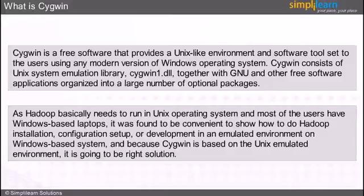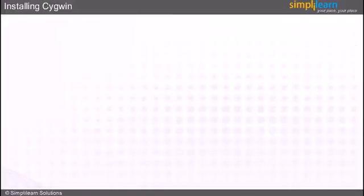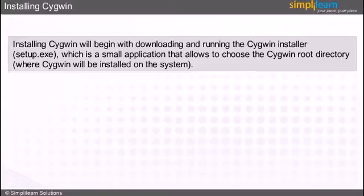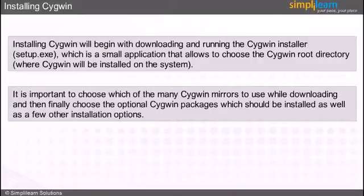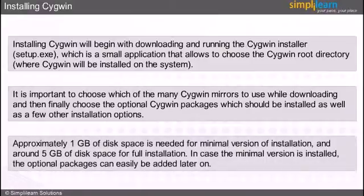In the next slide, we will look into the installation of Cygwin. Installing Cygwin begins with downloading and running the Cygwin installer, setup.exe, which is a small application that allows you to choose the Cygwin root directory where Cygwin will be installed on your system. You should choose which Cygwin mirror to use while downloading, and then choose the optional Cygwin packages to install, along with a few other installation options. You may need approximately 1 GB of disk space for the minimal version, and around 5 GB for a full installation.